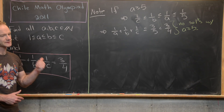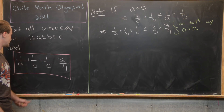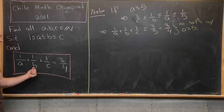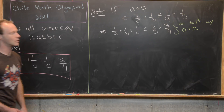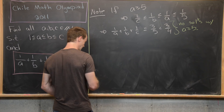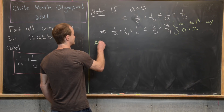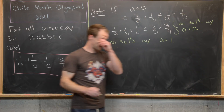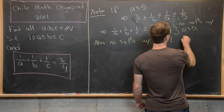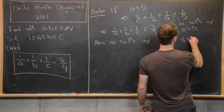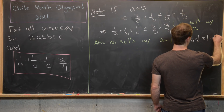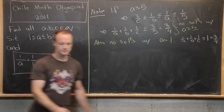So we'll have to check A = 4, 3, and 2. We do not need to check A = 1, because if A = 1, then 1/A + 1/B + 1/C ≥ 1, which is strictly bigger than 3/4. So there are also no solutions with A = 1.